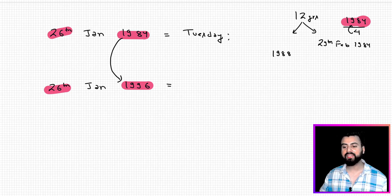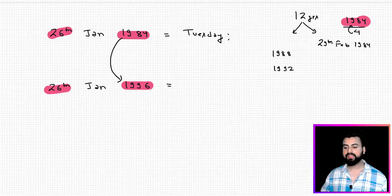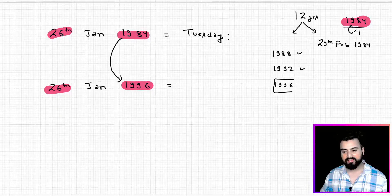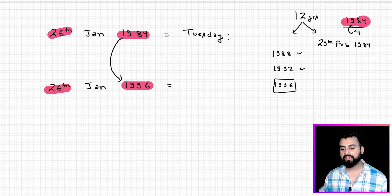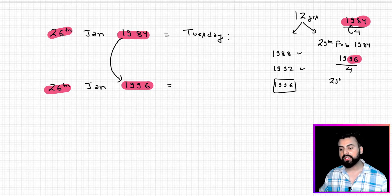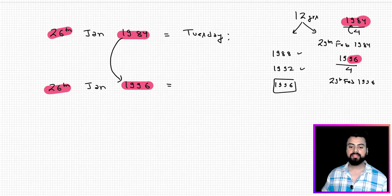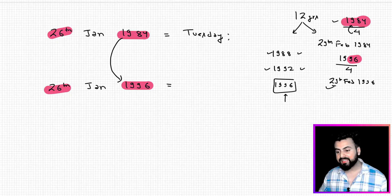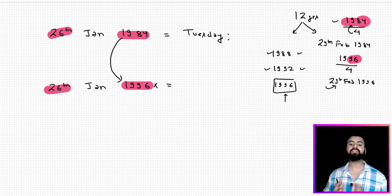After 1984, leap years come every four years: 1988, 1992, then 1996. Now 1996 is a leap year — the last two digits 96 are divisible by four. But you must check: will 29th Feb 1996 be part of my calculation? No, it will not. Therefore I will not consider 1996 as a leap year in this calculation.